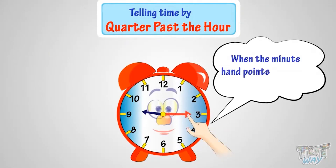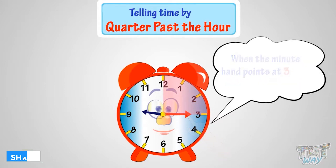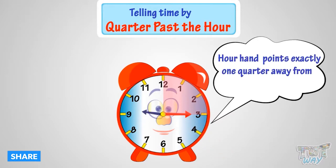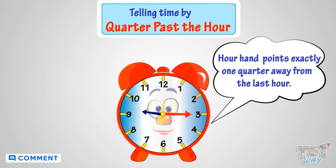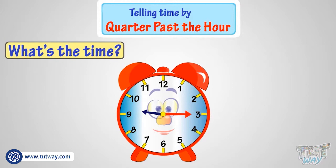When the minute hand points at 3, it is quarter past the hour, because the minute hand has moved a quarter past the clock. The hour hand also points exactly one quarter away from the last hour.